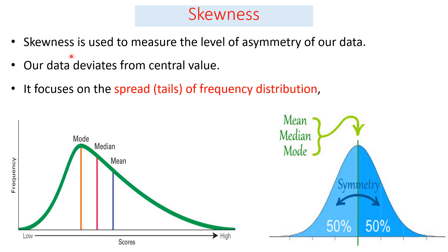Proceeding to skewness: skewness is used to measure the level of asymmetry of our data. It measures the deviation from the central value and focuses on the spread or tails of the frequency distribution curve. Unlike the normal distribution curve, a skewed distribution deviates from the central value — for example, skewed towards the right, where the right tail is longer than the left tail and there are some extreme values.